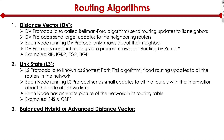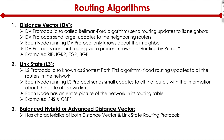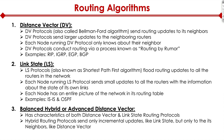The final type is called balanced hybrid or advanced distance vector. These protocols have characteristics of both distance vector and link state. Hybrid routing protocols send only incremental updates similar to link state, but only to their neighbors like distance vector. An example includes EIGRP.